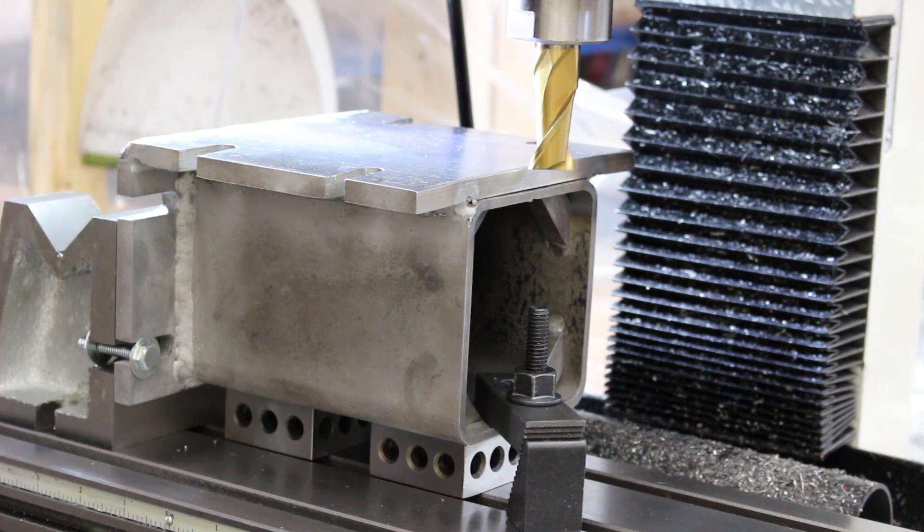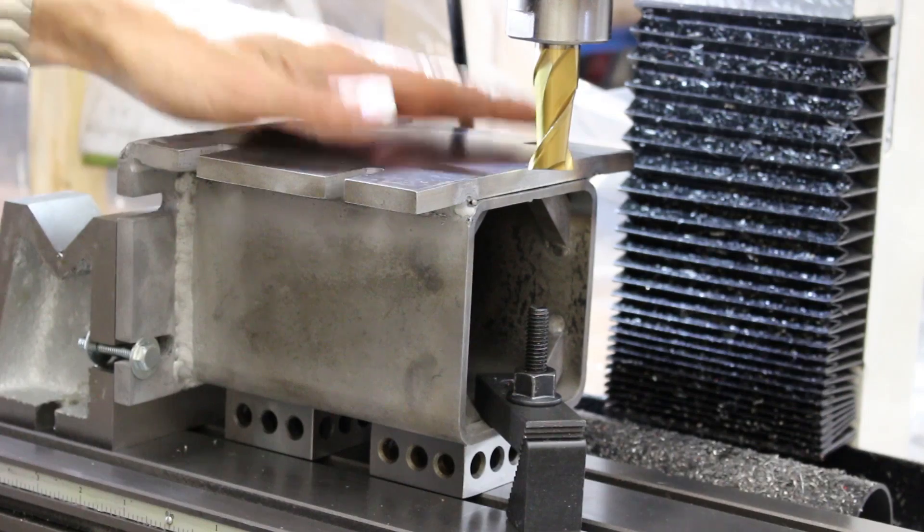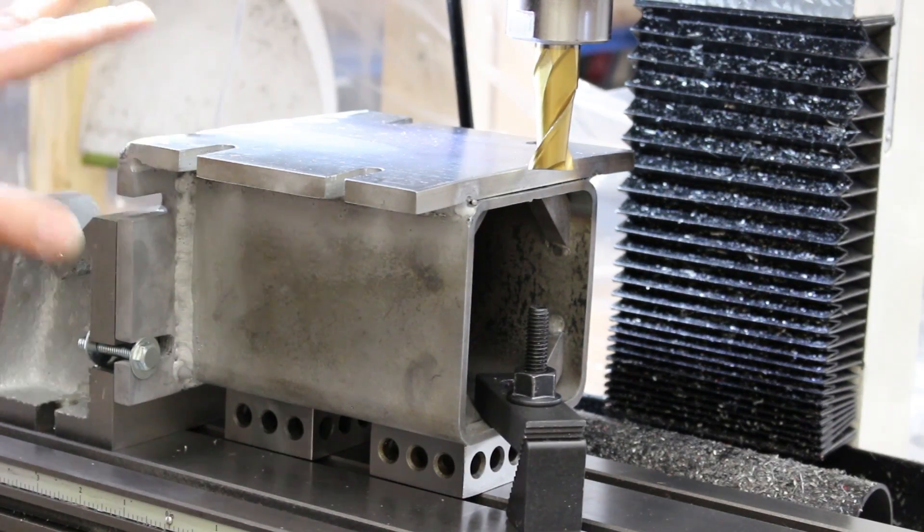Now it's time to flatten the base of the assembly and I have it mounted upside down so that the base is up and I've clamped it as rigidly as I can manage.